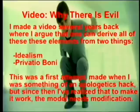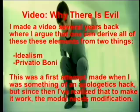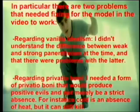How do we derive all of this? I made a video called 'Why There is Evil' back in 2012, and I argued you can derive all these elements from two basic things: idealism and privatio boni. This was a first attempt, and I was a bit of an apologetics hack, but I've since realized that to make the model fully work, it needs to be modified a little bit.